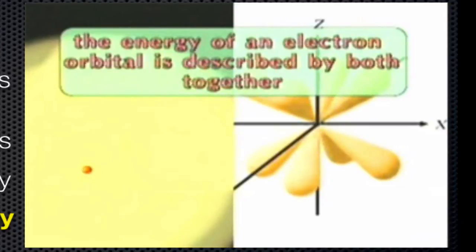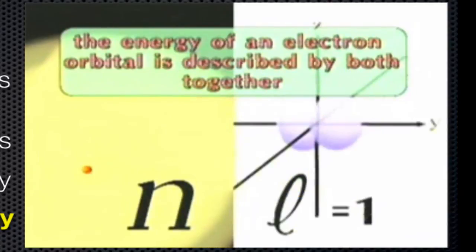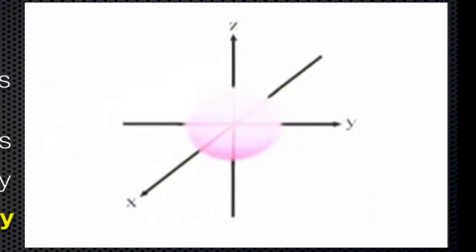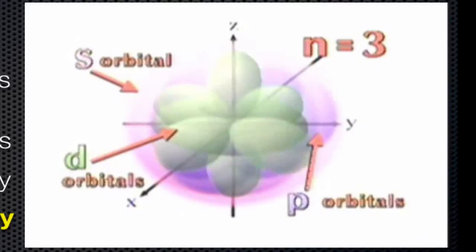So, the energy of an electron orbital is described by both the principal quantum number N and the second quantum number L together. As N increases, there is more than one orbital shape. For example, where N is equal to two, there are S and P-shaped orbitals. S-orbitals have lower energy than P-orbitals and fill first. At N equals three, D-orbitals with higher energies than P fill last.